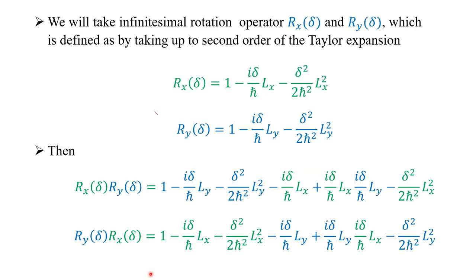Similarly, we will take the infinitesimal rotation along the x-axis with a small angle delta, and the y-axis Ry delta. Now we take up to the second order of Taylor's expansion. Then you will get Rx equal to 1 minus i delta over h-cross Lx minus delta squared over 2 h-cross squared Lx squared. We are taking only the first two orders. Similarly for y, Lx is replaced by Ly. Then you multiply Rx and Ry — that is, you operate with Ry first, then Rx next.